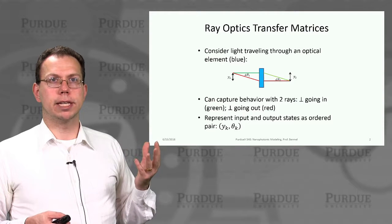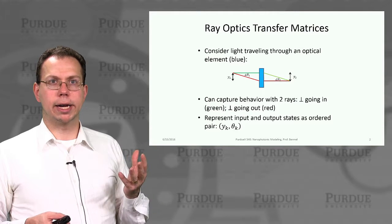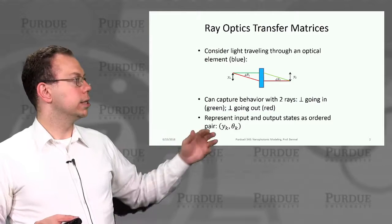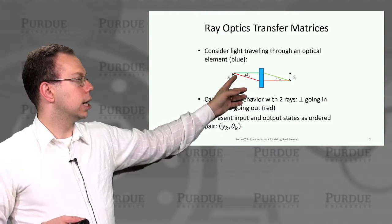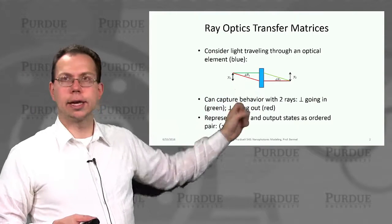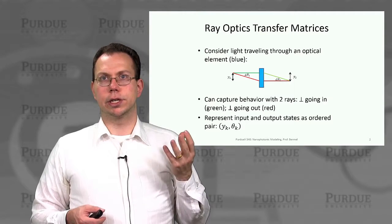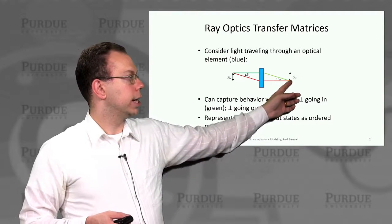You can think of it mathematically as a mapping between the initial coordinates, height y1 and angle theta 1, to the final coordinates, which are a new height, y2.